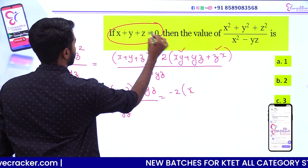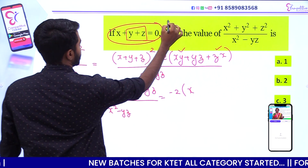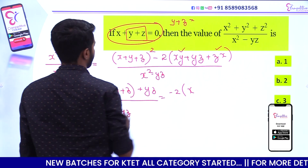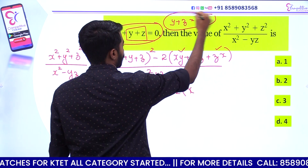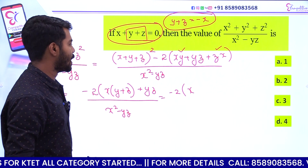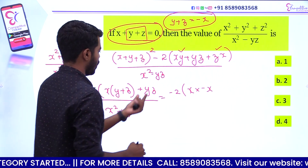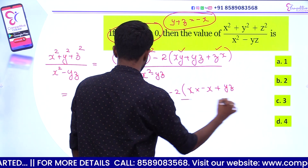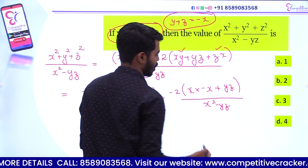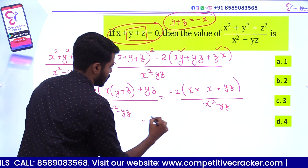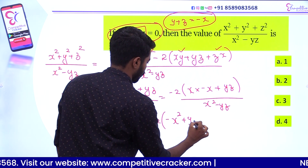x plus y plus z is equal to 0. I will go to x plus z. y plus z is equal to minus x. That is the value of y plus z is equal to minus x. Now, minus x is equal to minus x. And each of these values: x plus y is equal to x² minus z. Here is the value of x² minus x.